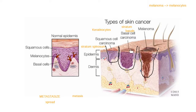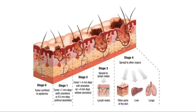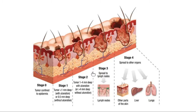Melanoma grows really quickly, which is why it's important to catch it early. We have four stages of melanoma. Stage four is the most serious stage — that's when we have metastasis, when spreading is happening. For melanoma specifically, some of the places it's most likely to spread are the lungs, liver, or other parts of the skin. Stage four means you have your original cancerous lesion plus other places in the body where those cells went.